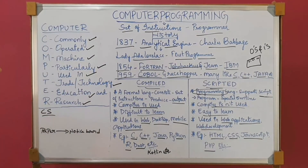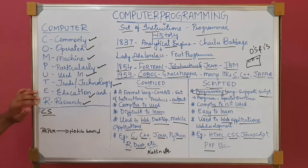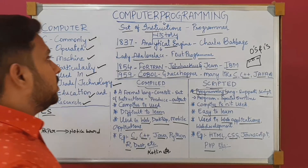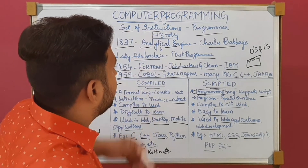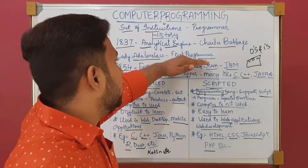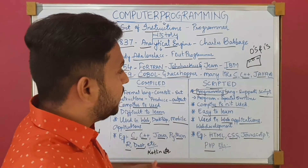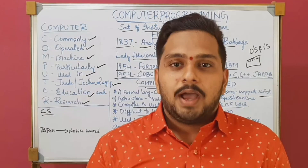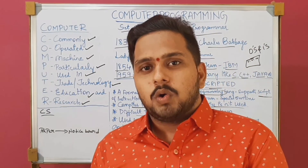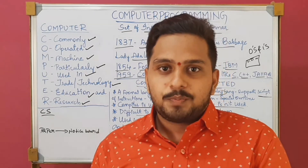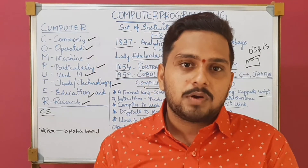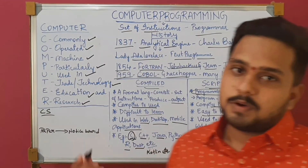In this video, we have learned about what is a computer, abbreviation of computer, what is a programming language, what is computer programming, who is a computer programmer, some history about computer programming, which is the first computer, who is the first programmer, which is the first programming language, and the difference between compiled and scripted programming. I hope you have got some knowledge about basics of computer programming. In my upcoming video, let us know about types of programming languages, some programming paradigms, and a little introduction to our first programming language, C.